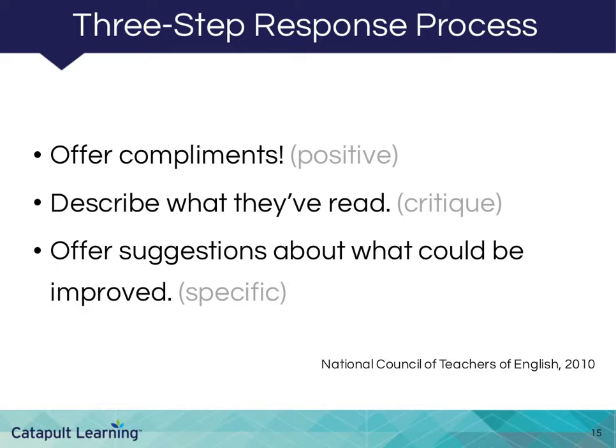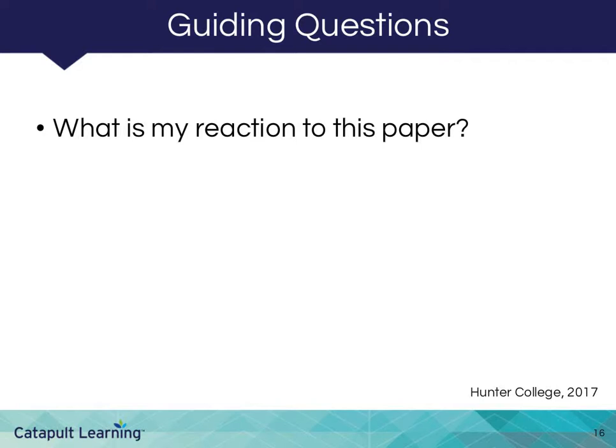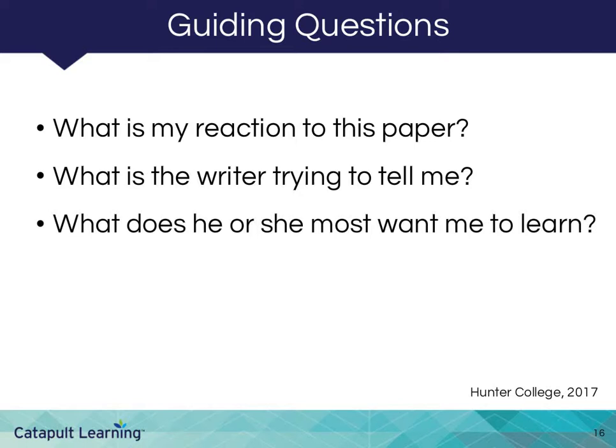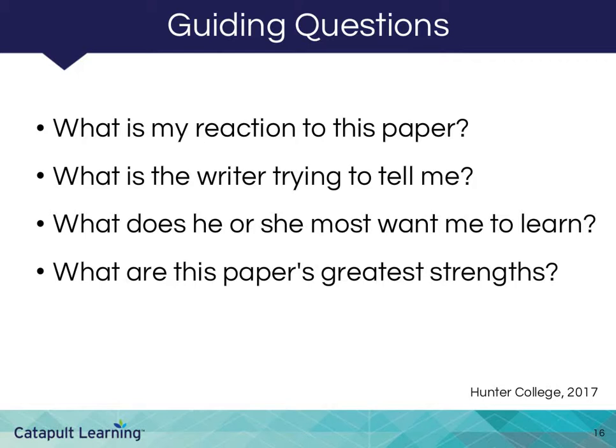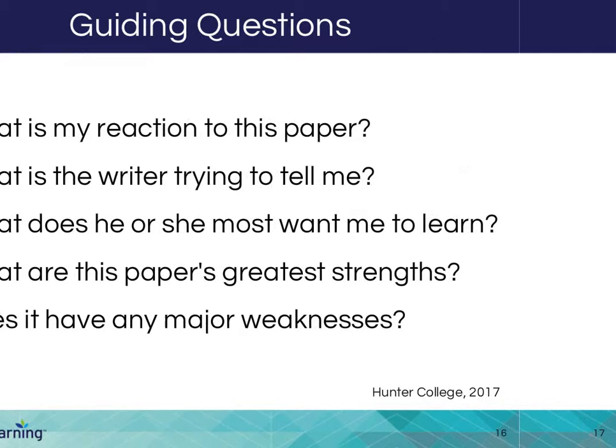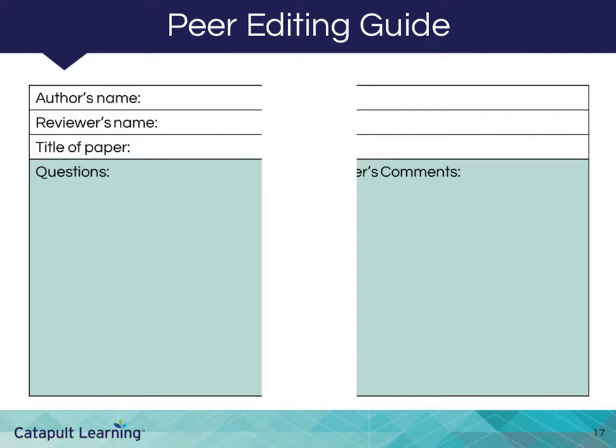Similar to an editing or proofreading checklist, a list of questions helps to guide peer editors through this process. This list of initial questions guides students to take a broad view of their partner's writing samples: What is my reaction to this paper? What is the writer trying to tell me? What does he or she most want me to learn? What are this paper's greatest strengths? Does it have any major weaknesses? You may also use a checklist that addresses meaning, organization, structure, purpose, or writing strategies.